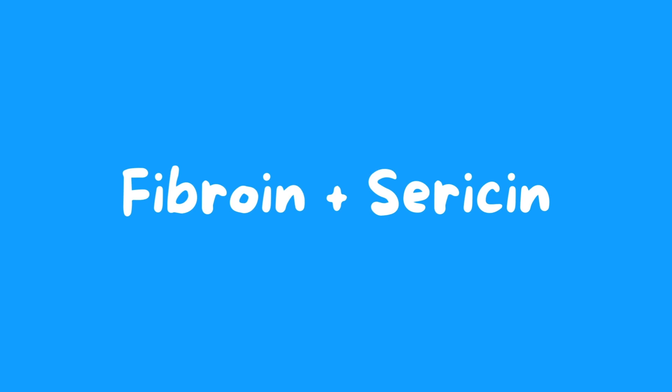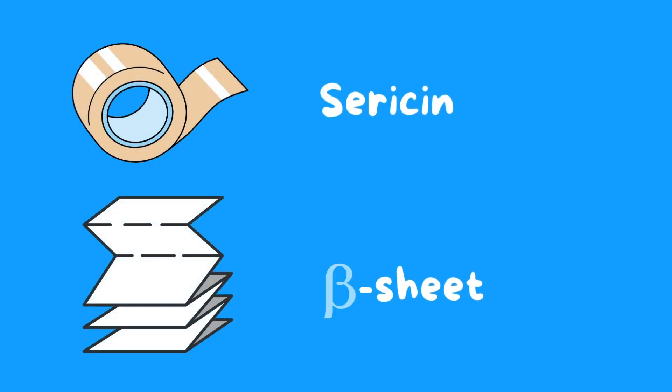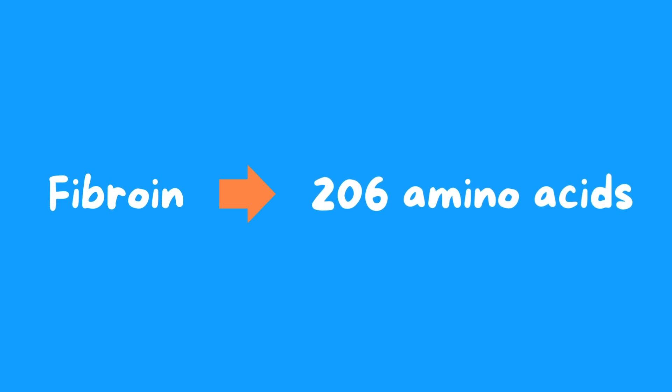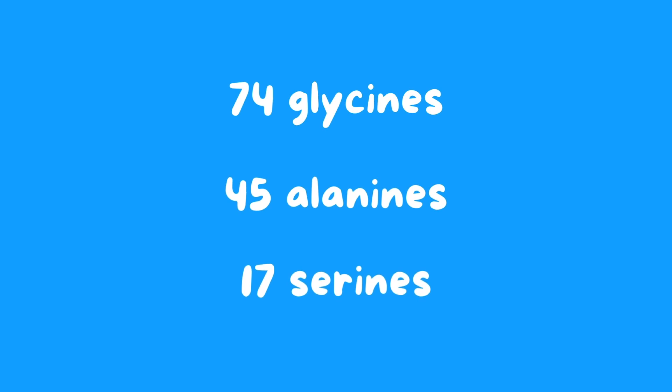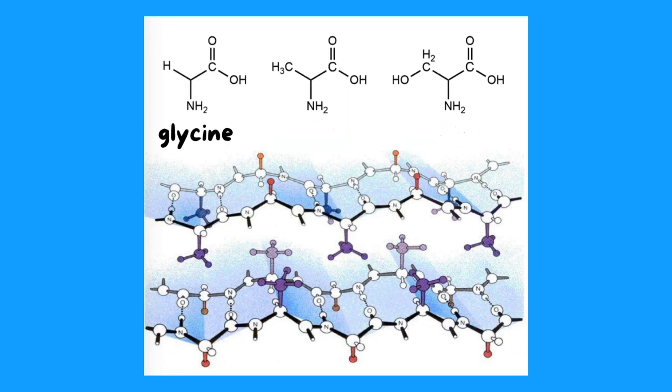Silk is composed of two main proteins: fibroin and sericin. Sericin is the protein which gives silk its adhesive power, while fibroin is a beta-sheet protein that gives resistance and elasticity to the fiber. Fibroin is made up of approximately 206 small amino acid units organized into stacked beta-sheets. The presence of small amino acids — 74 glycines, 45 alanines, and 17 serines — allows the protein to better pack the beta-sheets, with the side chains of the alanines and the hydrogens of the glycines on opposite sides. In this way, the sheets can interact with strong van der Waals interactions and hydrogen bonds to make the protein extremely resistant.